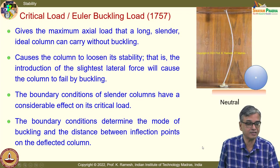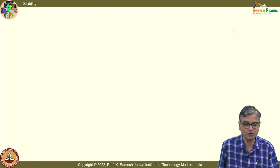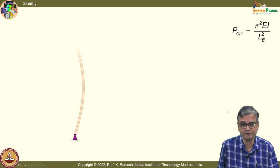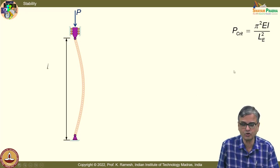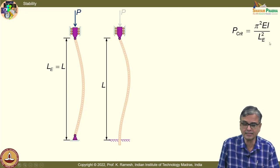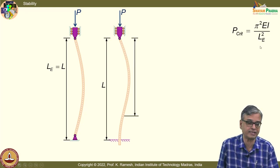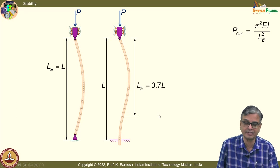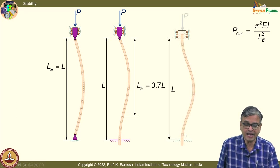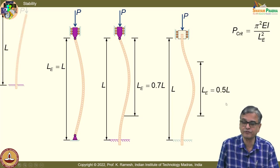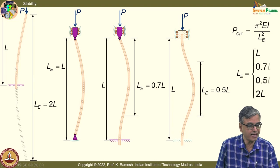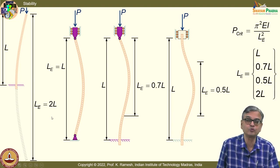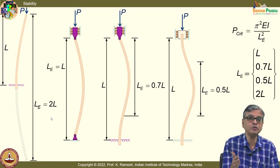You view the critical load from a different perspective, taking the hinged-hinged column as a basis with critical load π²EA/L²_e. Other boundary conditions are visualized with an equivalent column length. A fixed-pin column is equivalent to 0.7L; a fixed-fixed column to 0.5L; a cantilever to 2L. The longer the column, the more it is prone to buckling.